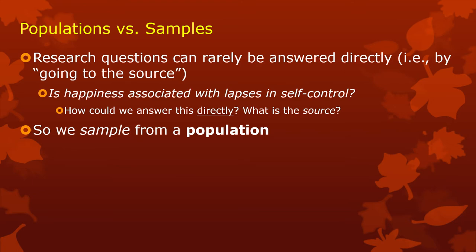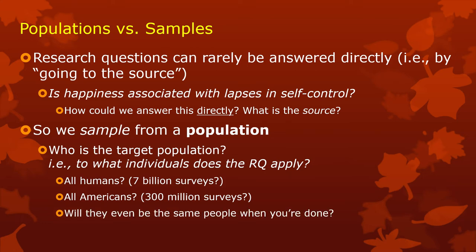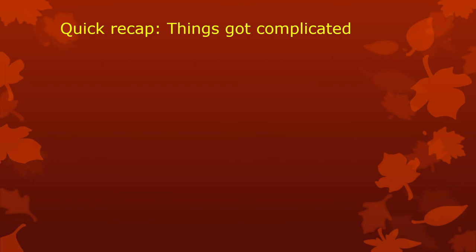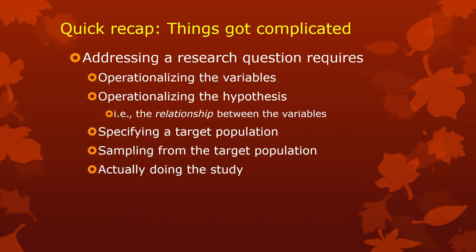Since we can't go to the source, we usually sample from a population. A sample is small; a population is big. A sample is a subset of a population — some possible observations. A population is all possible observations. We have to decide which population before we can sample. So to what individuals does the research question apply? All humans? All seven billion? You can't do that. There are all sorts of problems when we try to get information from the whole population. Addressing a research question requires operationalizing everything, specifying the target population, then sampling from that population, then doing the study. Things are getting complicated pretty quickly.